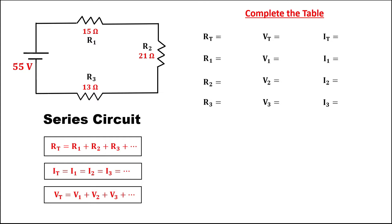from the given, we have 55 volts for the total voltage, then for resistance 1, that's 15 ohms, resistance 2, that's 21 ohms, and resistance 3, that's 13 ohms.